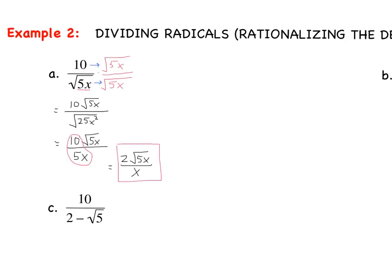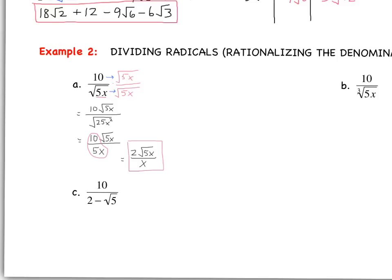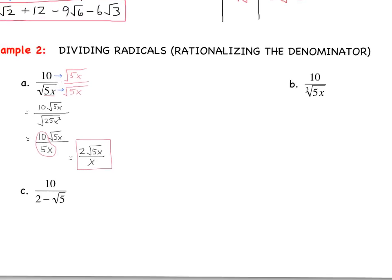The next example is similar but a little different. Example B is almost identical to example A, except now we have an index of 3. When rationalizing the denominator with a cube root, we want to multiply by the cubed root of something because our index must match. So now we ask: 5 times what gives me a perfect cube? Our index tells us what perfect power we need.